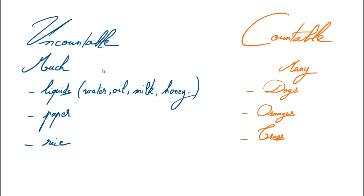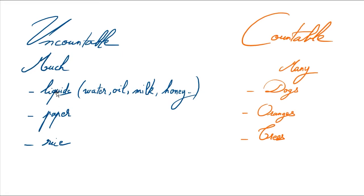Uncountable nouns go with MUCH. With liquids, we usually use MUCH, because liquids are uncountable — like WATER, OIL, MILK, and HONEY.